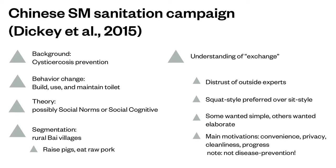Here's a quick example — you can read more in Dickie et al. in the end resources. This was a Chinese program oriented for disease prevention. The behavior they wanted to change was to build, use, and maintain a toilet, which was new to the area. Since this was a community-level intervention, they wanted everybody to adopt this new behavior. They used a social norms or social cognitive theory approach and focused on villagers who were raising pigs and eating raw pork.